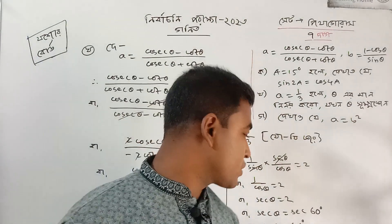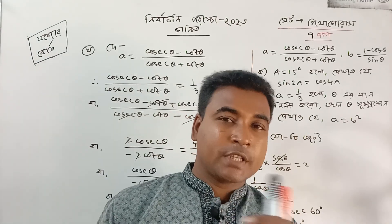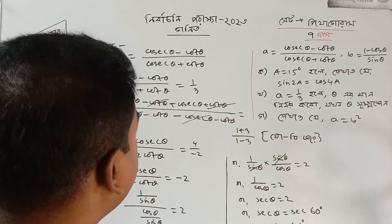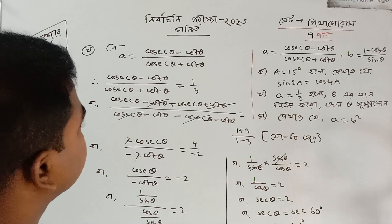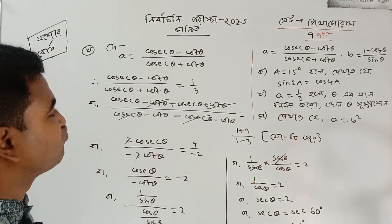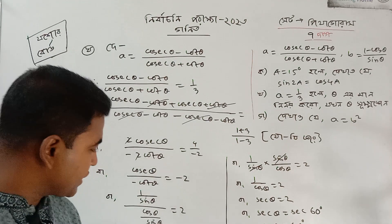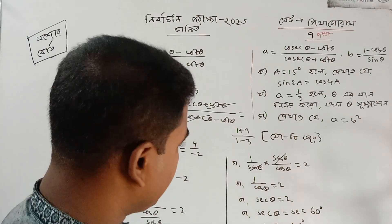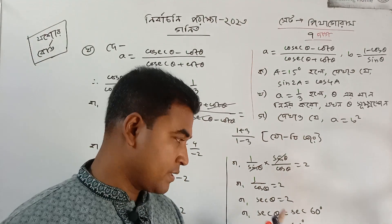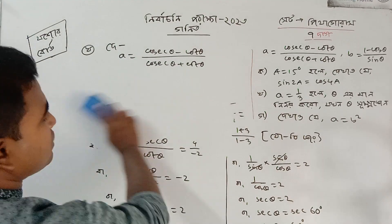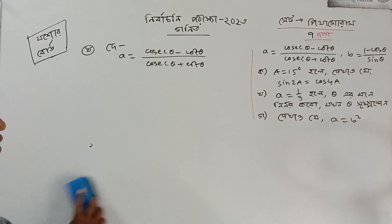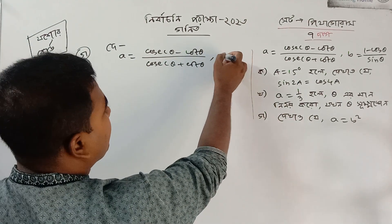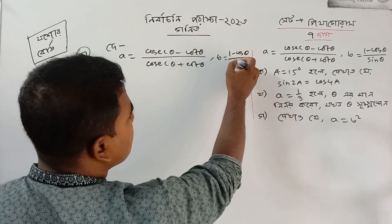Therefore, cos theta equals 2, which means theta equals theta. You can get a positive result. 1 by cos equals 2 — complete. Now, number one: a is equal to b squared. There was a equals data, and b equals a on minus cos theta, sin theta.